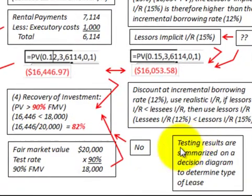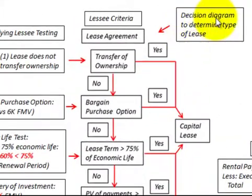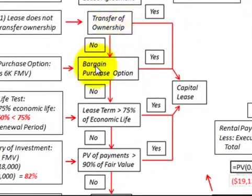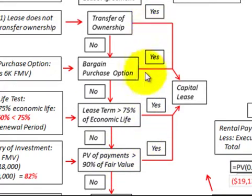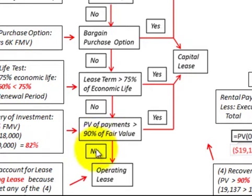Looking at the decision diagram: we tested transfer of ownership, bargain purchase option, lease term greater than 75% of economic life, and present value of minimum lease payments greater than or equal to 90% of fair value. If we had answered yes to any one of those tests, it would be a capital lease for the lessee. In our example, we answered no to each test, so it becomes an operating lease. If you can't pass any of these tests, it becomes an operating lease; if you pass any one or more, it becomes a capital lease.